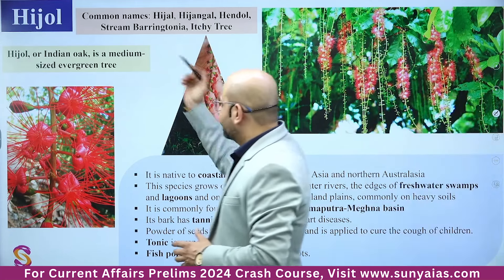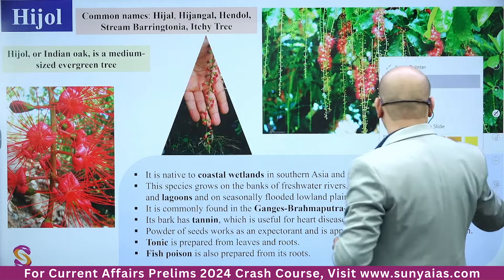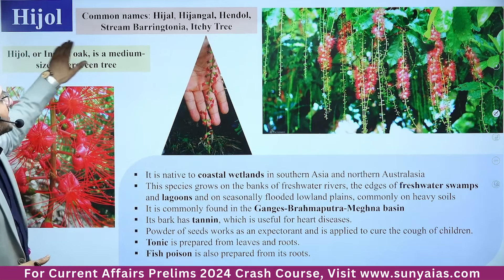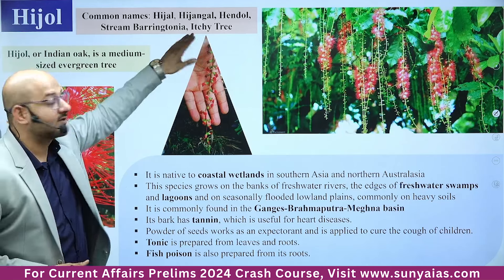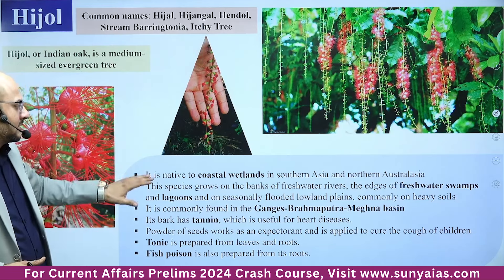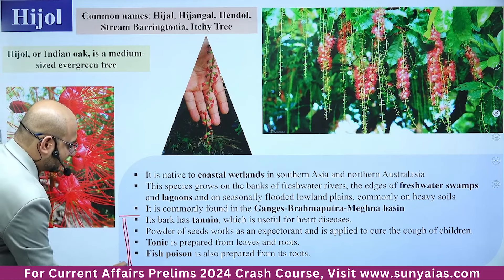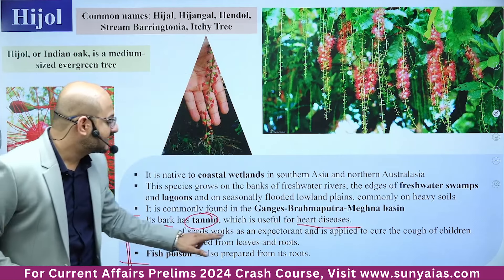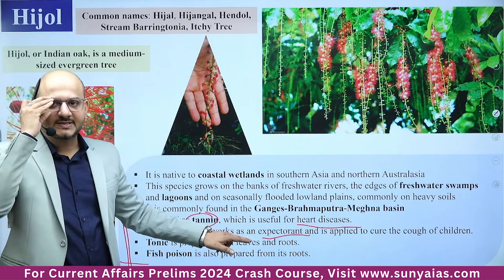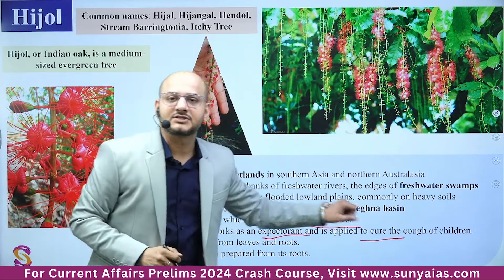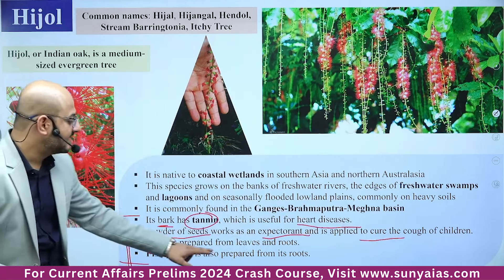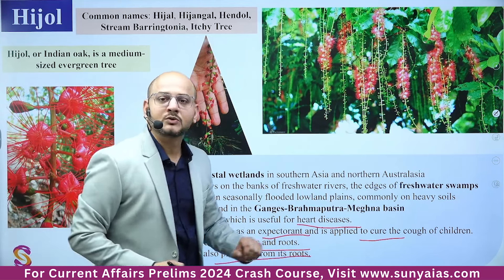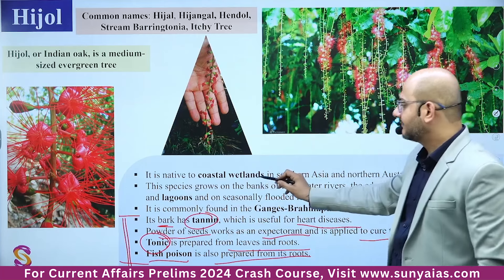Next is Hijol — also known as Hijal, Hijangal, or Hendol. UPSC is interested in medicinal plants these days. Hijol's bark contains tannin, which is useful for heart diseases. The powder of its seeds works as an expectorant and is applied to cure cough in children. A tonic is prepared from its leaves and roots. Fish poison is also prepared from its roots — making it quite a useful medicinal plant.